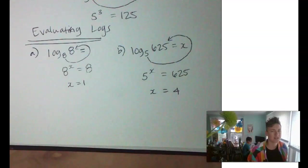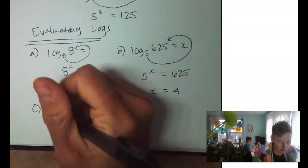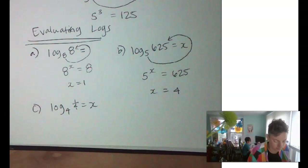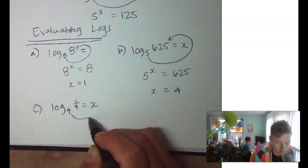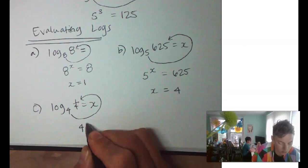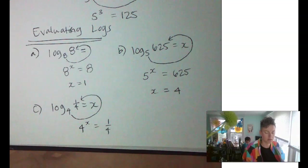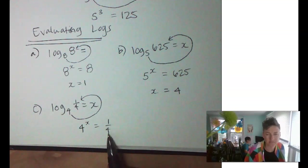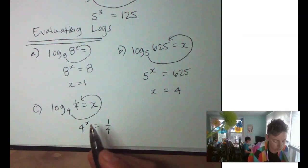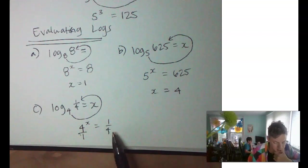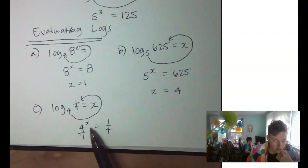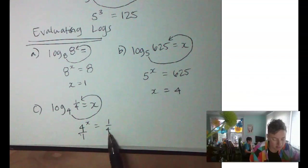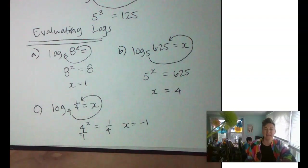Alright, one more. It's going to look trickier than it actually is. Log base 4 of 1 fourth equals what number? Loop it up. 4 to the x equals one fourth. 4 to what power equals one fourth? Uh, what? I turn 4 somehow into a fraction? Hold on. What if I make this a fraction? What did I really do here? Oh! If this was four to the negative one, then that four would go into the denominator like it did over here. So that must mean x equals negative one. Nice. Nice work.